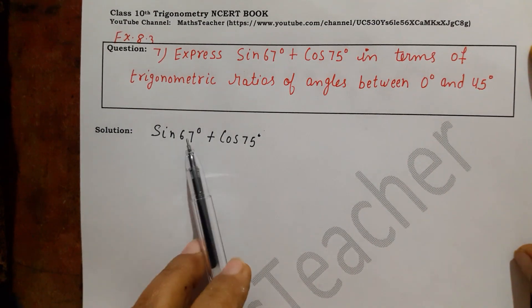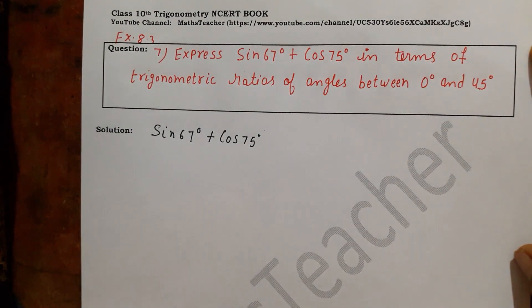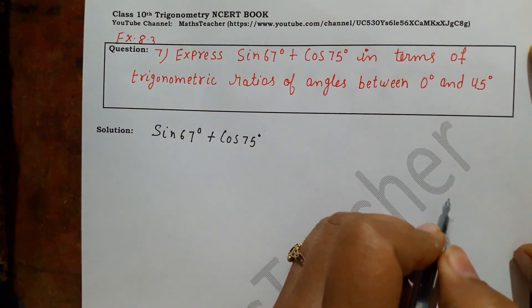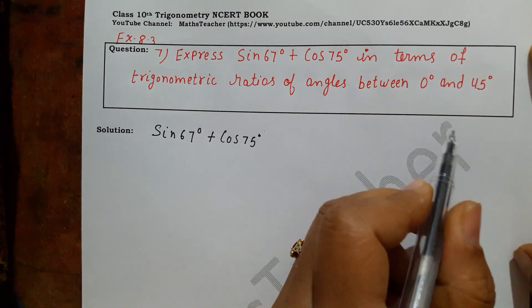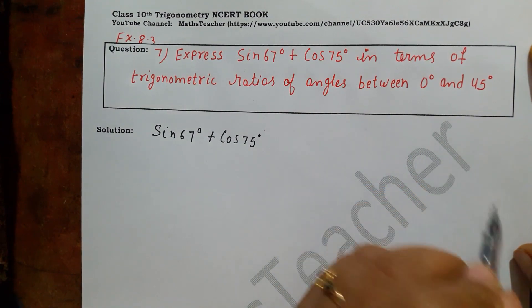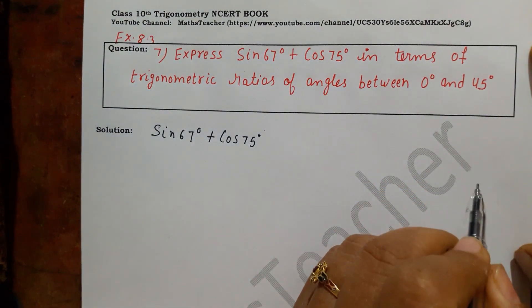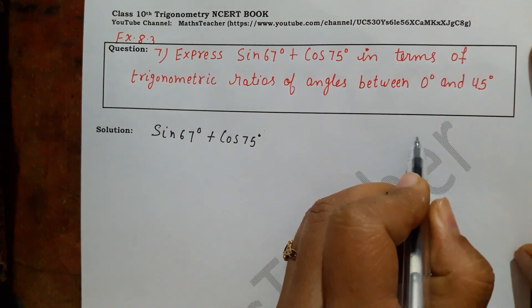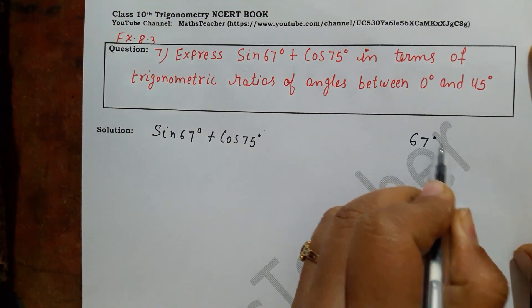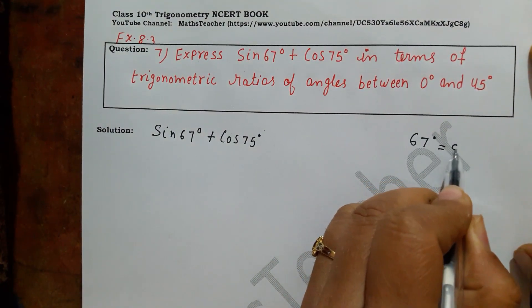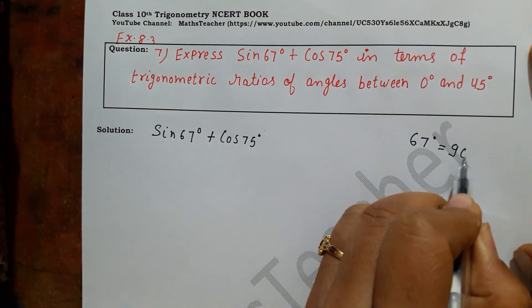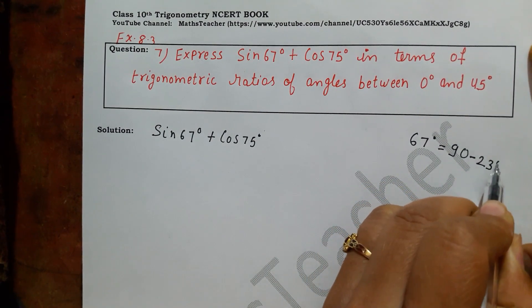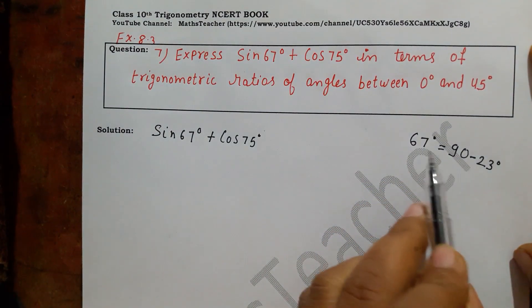For sin 67°, we look at the complementary angle. The complementary of 67° is 90° minus 67°, which equals 23°. So we can write 67° as 90° minus 23°.